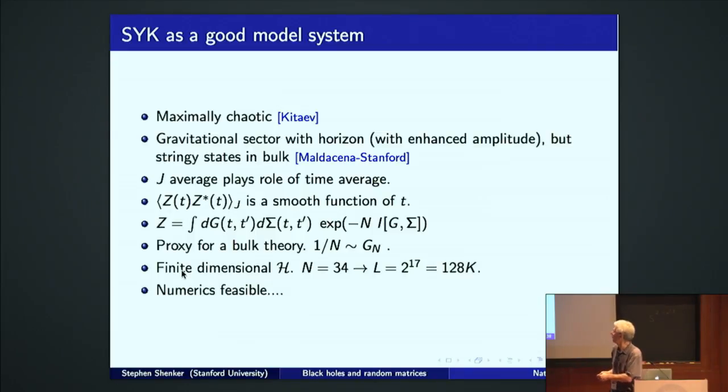You think you could reconstruct whatever bulk there is by these bilinears, these bi-local Gs and Sigmas. And so in some sense, what we want to do is find whatever phenomena we find and then ultimately reinterpret them in terms of this bulk proxy theory. That's a part we haven't got very far on. I'll just make a couple of comments. But that's the goal.